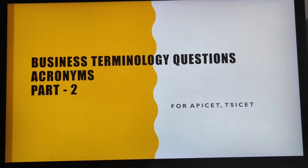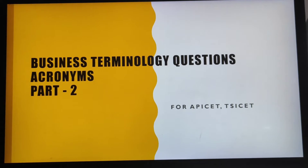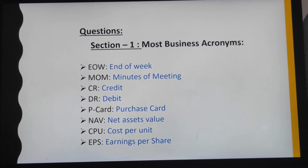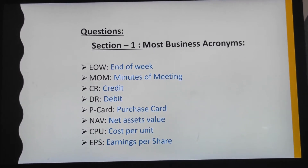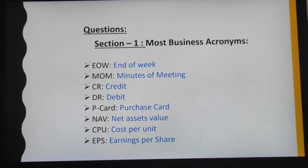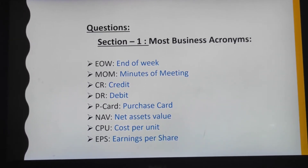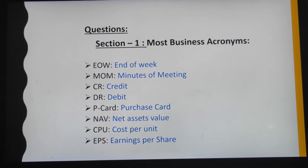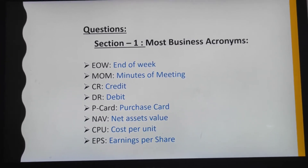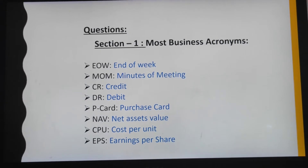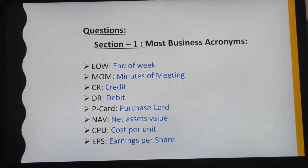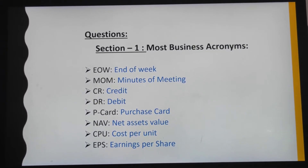Now look at section 1 questions — mostly used business acronyms. EOW: end of the week. MOM: minutes of meeting. CR: credit. DR: debit. P-card: purchase card. NAV: net assets value. CPU: cost per unit, not central processing unit.